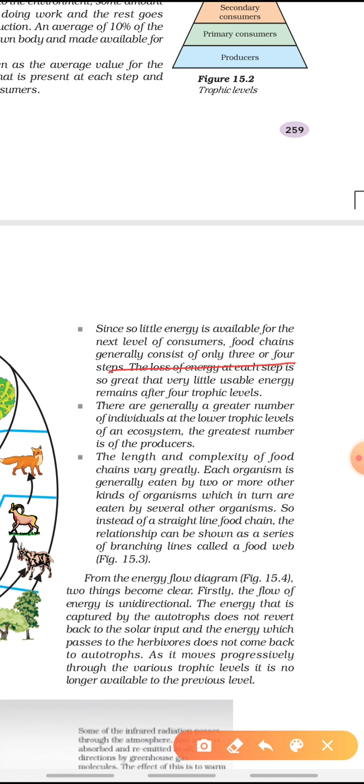There are generally a greater number of individuals at lower trophic levels of an ecosystem. The greatest number is of the producers. They are generally greater in number at the lower trophic levels. The lower the trophic level, the higher the population. The higher you go, the lower the population.